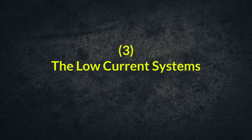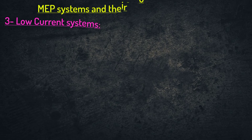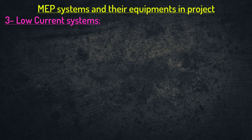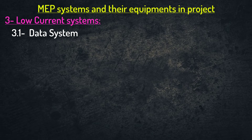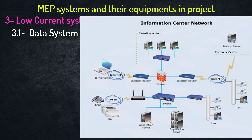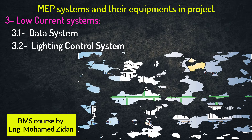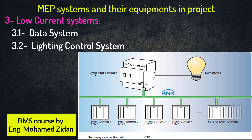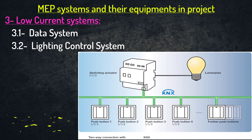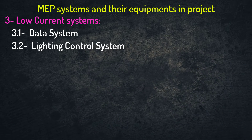The last category of MEP systems is the low current systems. The most common low current systems found in any project are summarized as follows. First, the data system, which is the network responsible for communication between all devices in the project. Second, the lighting control system — the system used to control the operation of lighting fixtures, such as the number of fixtures that will work, their working time, and their location.